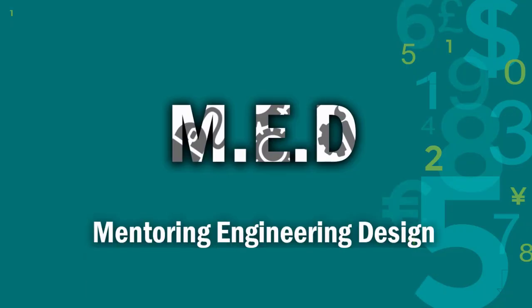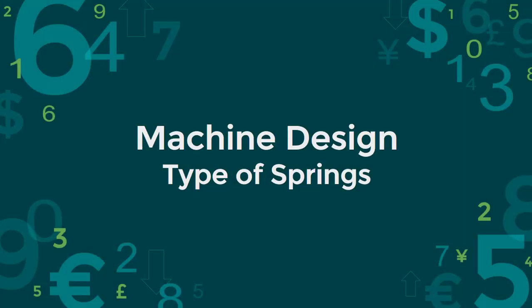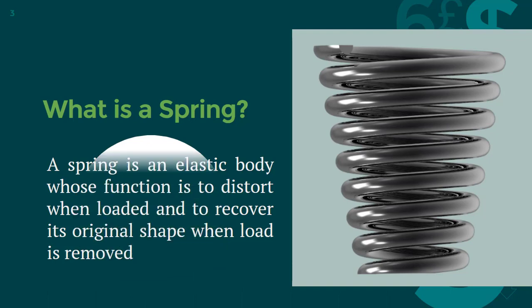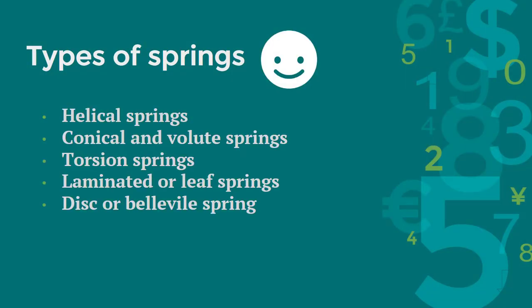Hello guys, you're watching Mentoring Engineering Design, and today we are going to talk about a topic from machine design, which is the different types of springs. So what is a spring? A spring is an elastic body whose function is to deform or distort when a load is applied on it, and to recover its original shape when that load is removed.